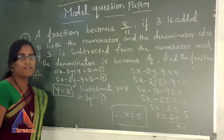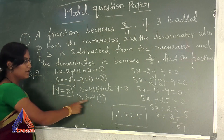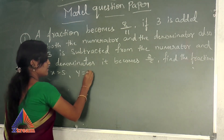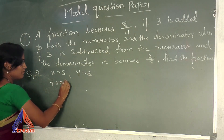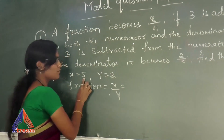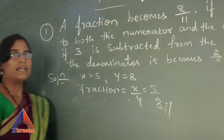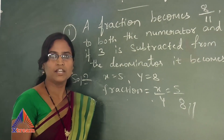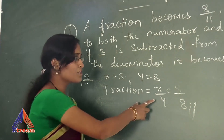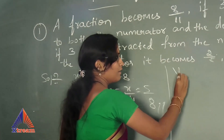So now we got the fraction. We already defined the fraction as X by Y. Here X is 5 and Y is 8. So the fraction X by Y is 5 by 8. This is our solution for the question.